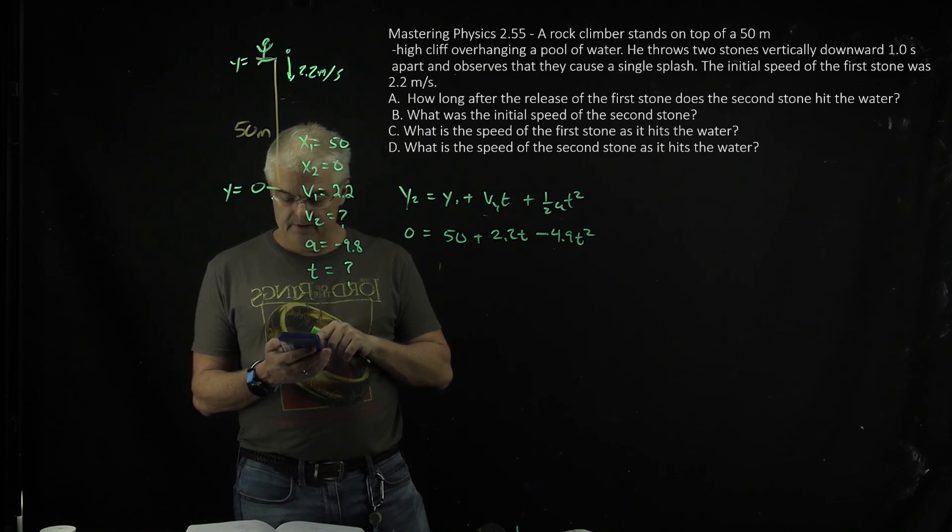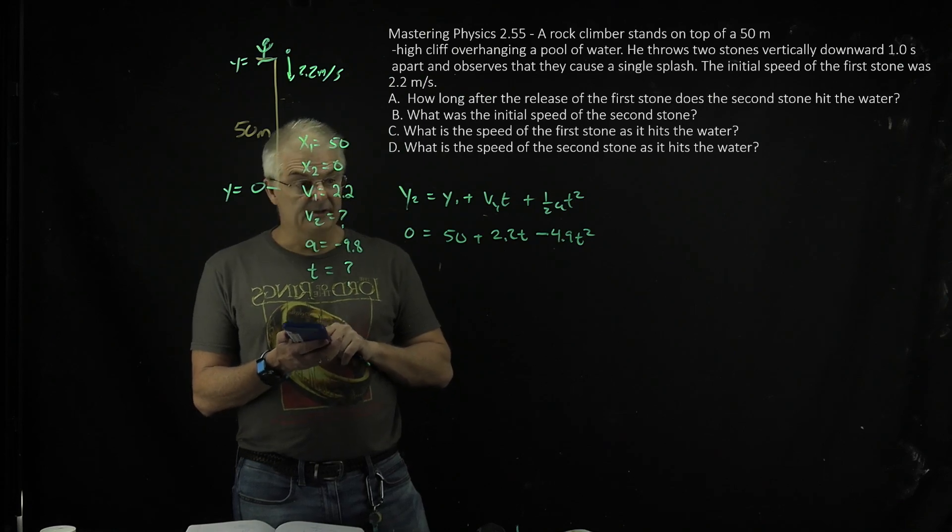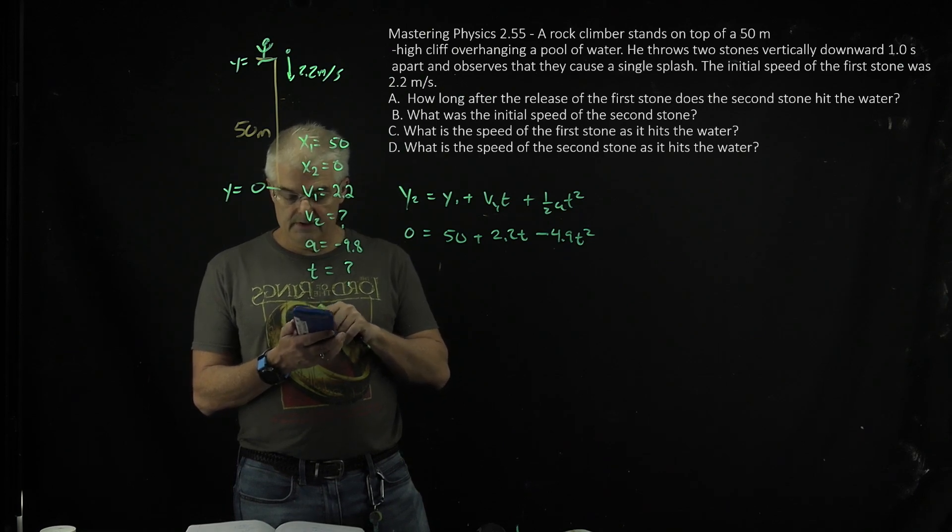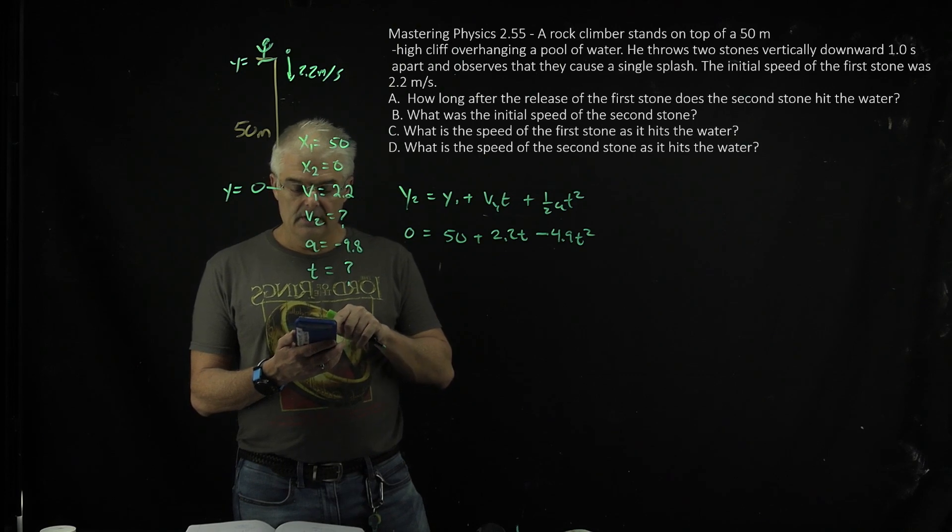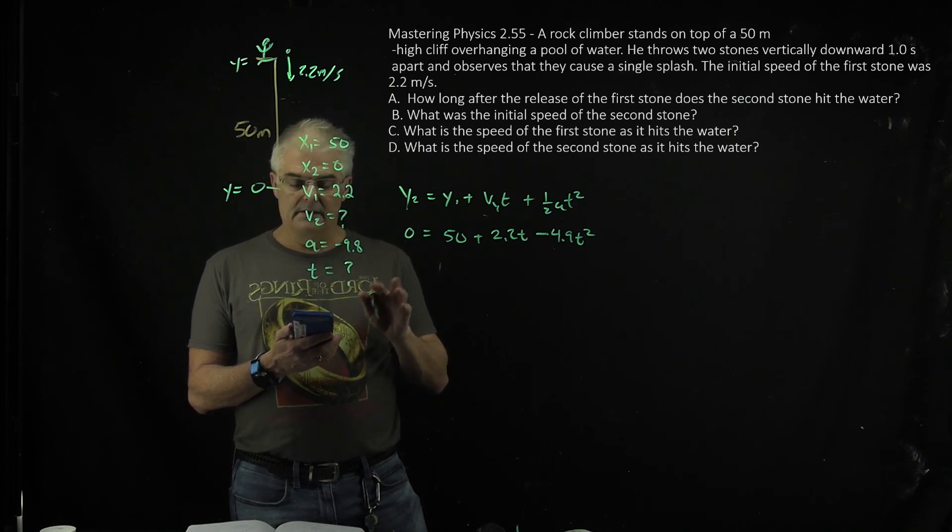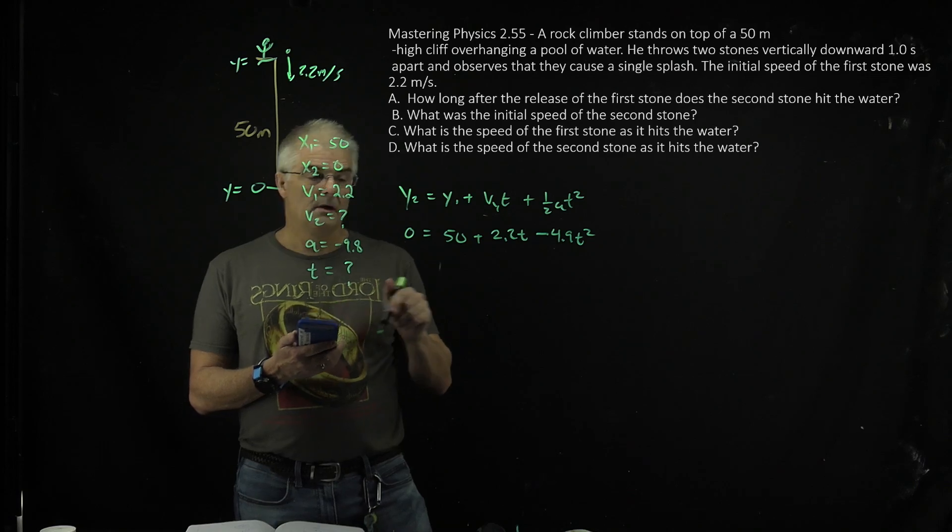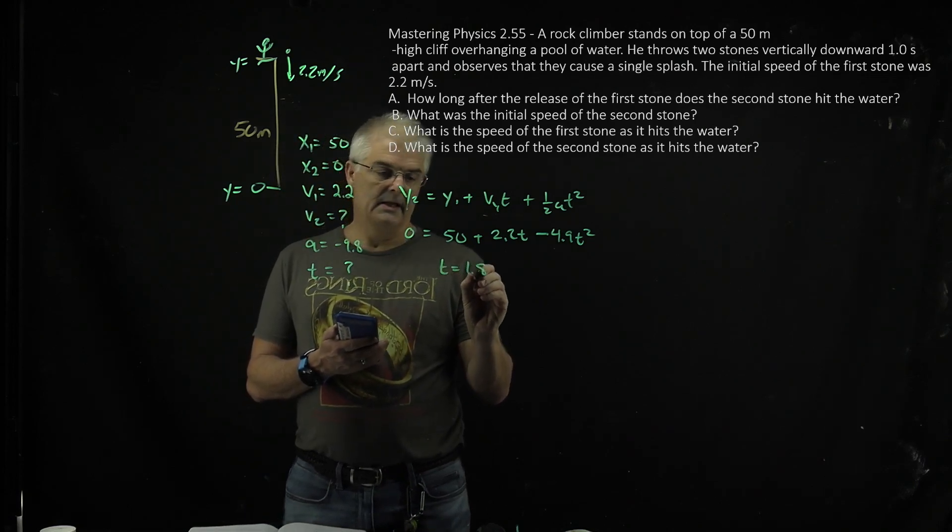I'm using a TI-84 plus CE edition. I'm going to go math, arrow up, numeric solver, and I'm going to type this in. So 50 plus 2.2. I say x here on my calculator, minus 4.9x squared. Okay, and I get an answer, by the way. I get t to be 1.8 seconds.